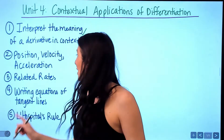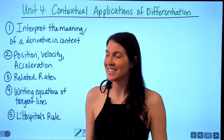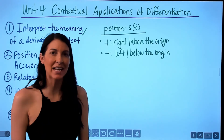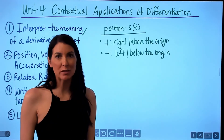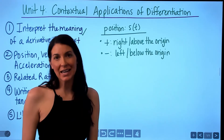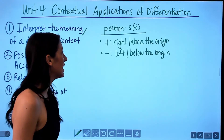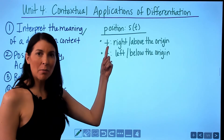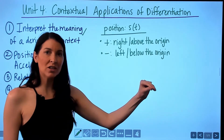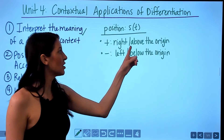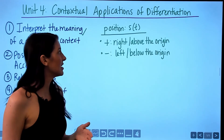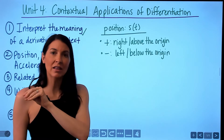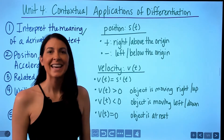Next is a big one: position, velocity, and acceleration. Position is often denoted s(t), or x(t) if the particle moves along the x-axis, or y(t) if along the y-axis. It represents the location of the object or particle. A positive position means the particle is to the right of or above the origin; a negative position means it is to the left of or below the origin.